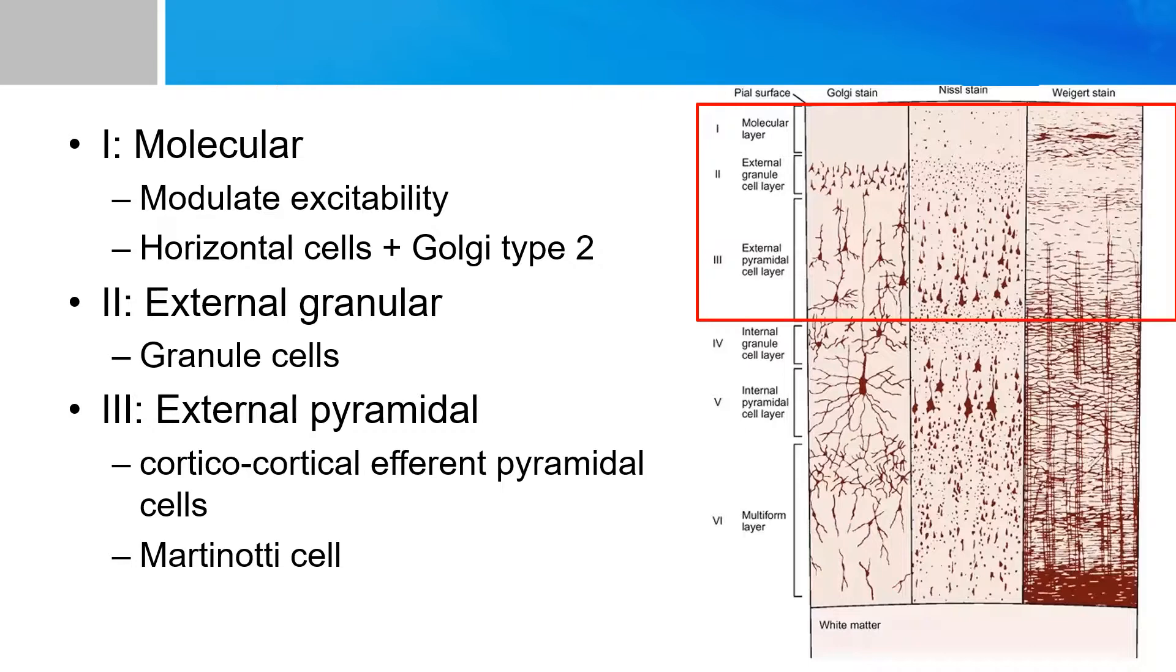And so layer two, the external granular layer is responsible for receiving input from other cortices of other parts of the brain. With layer three, the external and internal pyramidal layers are responsible for sending signals to other parts of the cortex.